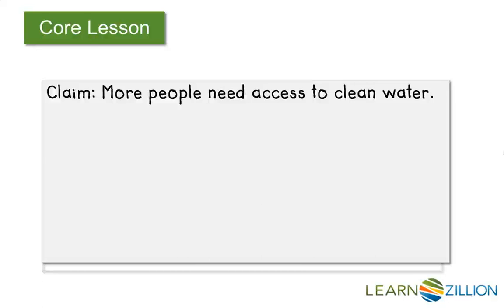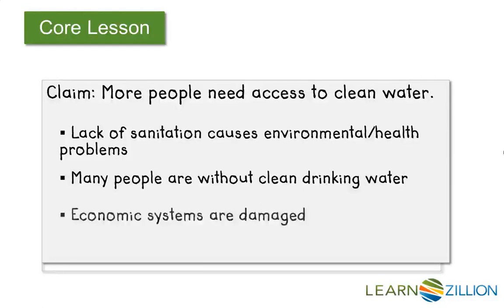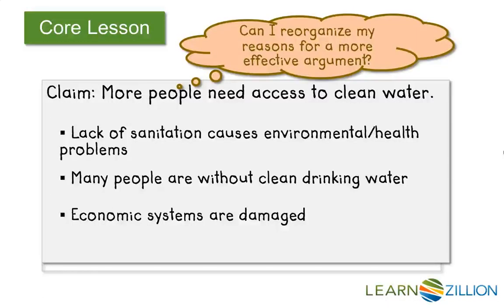My claim is that more people need access to clean water. Here are my major reasons, and I need to ask: can I reorganize these at all, and what do I want to lead off with? I want to lead off with how many people are without clean drinking water. Then I'll go with how lack of sanitation causes environmental health problems — not just clean drinking water, but clean water in general. I'll go with economic systems last because it's the most difficult, and having led into it, the reader can better understand why economic systems are damaged.